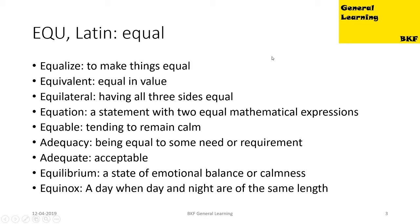Our first root is 'equ', it has a Latin origin and it means equal. Our first word is 'equalize', which means to make things equal — it's a verb. 'Equivalent' means equal in value; it's an adjective. 'Equilateral' is an adjective meaning having all three sides equal. 'Equation' is a noun — a statement with two equal mathematical expressions.